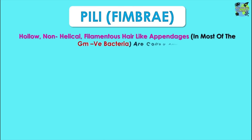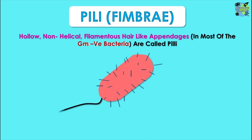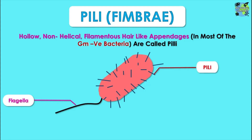The pili are hollow, non-helical, filamentous, hair-like appendages. These are present on the bacterial cell, particularly the gram-negative bacteria. You can see in the figure the bacterial cell showing the long structure that is the flagella, which we already studied, and the remaining structures shown are the pili.